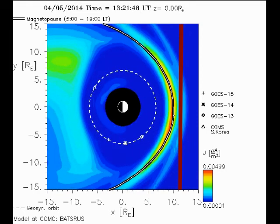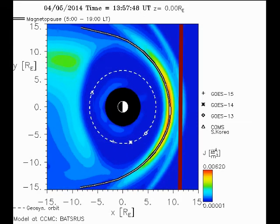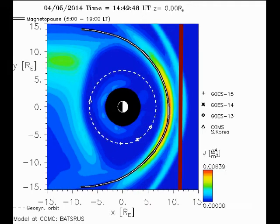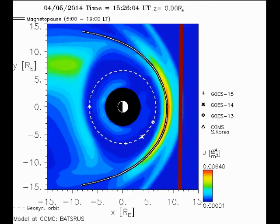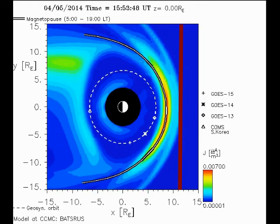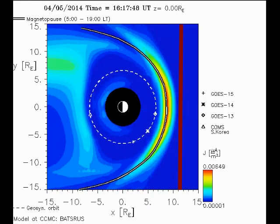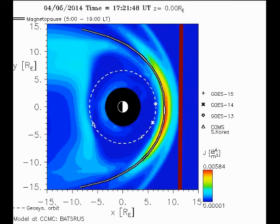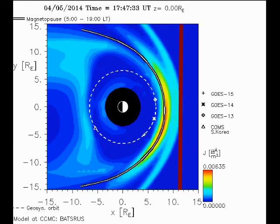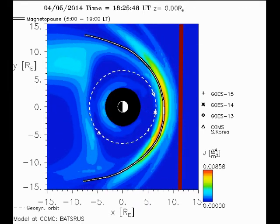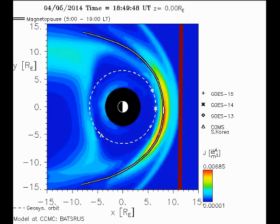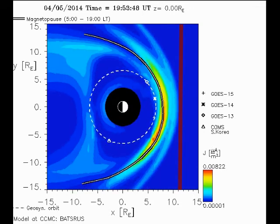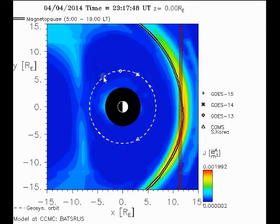You can see it extends and pushes our magnetic field almost into those satellites that are orbiting the earth. The GOES-15, GOES-14, and GOES-13 satellites. It's almost touching them. That's a whole lot of energy being exerted.